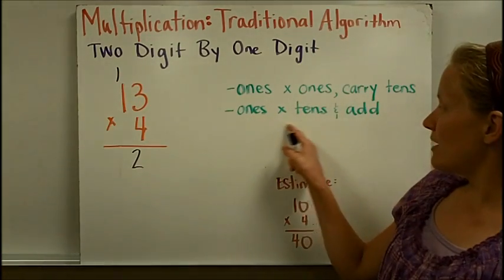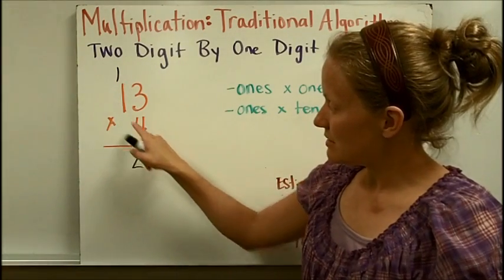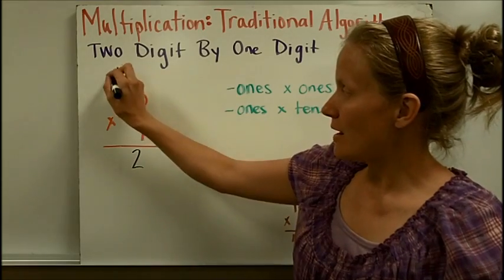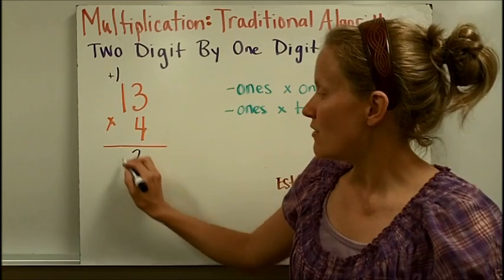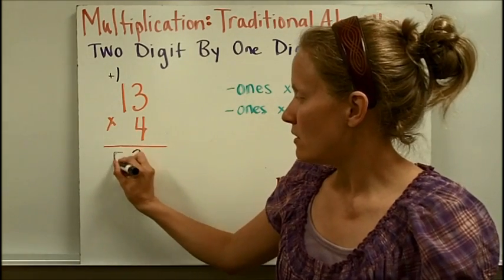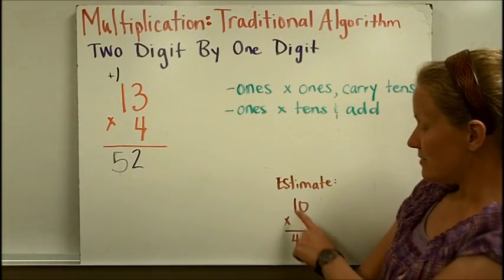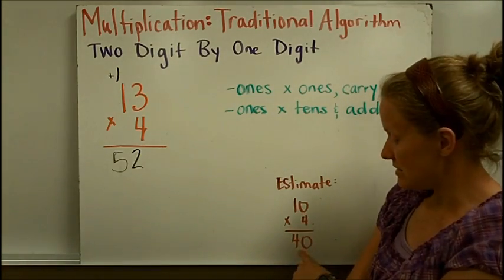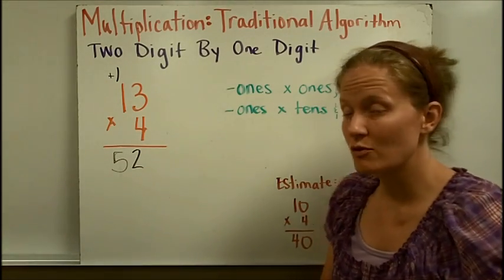Now we're going to do ones times tens and add. So I'm going to do the ones place times the tens place. 4 times 1 is 4, and then I'm going to add that one at the top. So 4 times 1 is 4, plus 1 is 5. So my product is 52. And I estimated this. I rounded 13 to 10, and I kept 4 as is. So my estimate was about 40, and 52 is pretty close to 40.